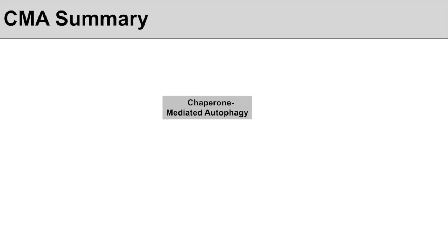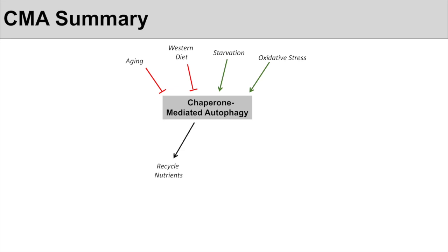In summary, CMA function is decreased by the aging process and by particular diets, especially the western diet. Certain things increase CMA function, particularly prolonged starvation and oxidative stress. CMA leads to the recycling of specific nutrients — about 30 to 40 percent of soluble proteins are recycled through CMA. This allows the cell to maintain proteostasis, and if CMA works properly we can see why it maintains health, while dysfunction leads to disease.